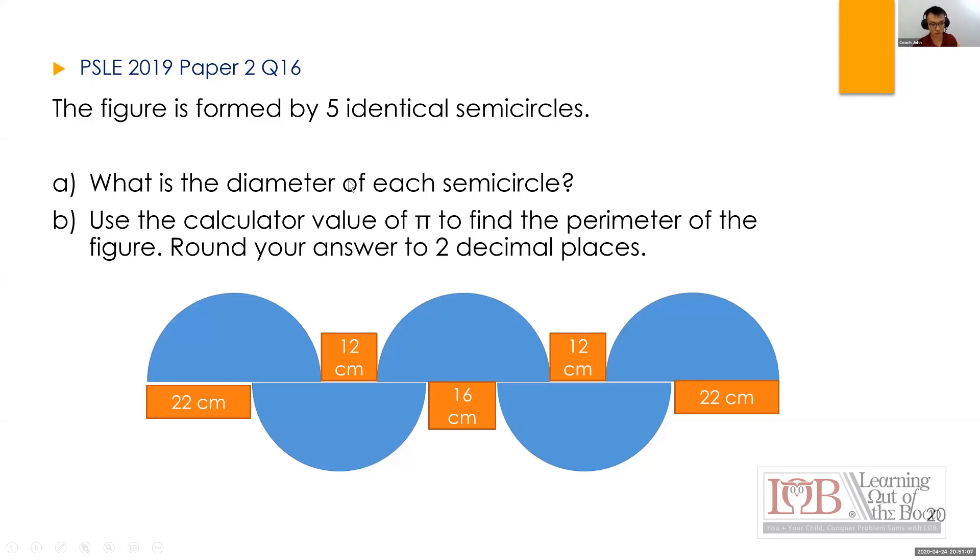This one you have seen before many times. They want to find the diameter of each semicircle. If you look at your PSLE booklets, your PSLE booklet will not have these orange boxes. They remind me of the Mandarin oranges we have given out in Chinese New Year. The reason why many kids are stuck is because there's nothing there. They cannot visualize air. They cannot see the air.